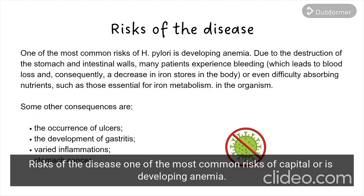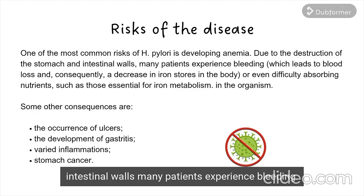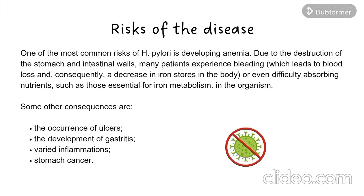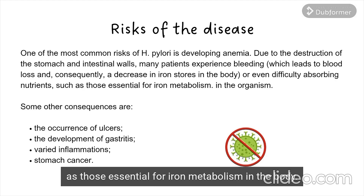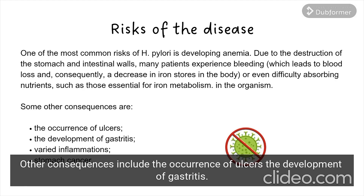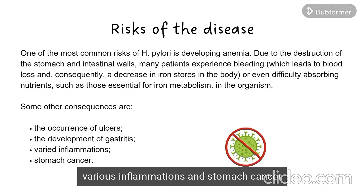Risks of the disease. One of the most common risks of H. pylori is developing anemia. Due to the destruction of the stomach and intestinal walls, many patients experience bleeding, which leads to blood loss and consequently a decrease in the body's iron stores, or even difficulty absorbing nutrients essential for iron metabolism. Other consequences include the occurrence of ulcers, the development of gastritis, various inflammations, and stomach cancer.